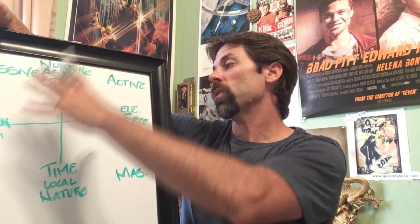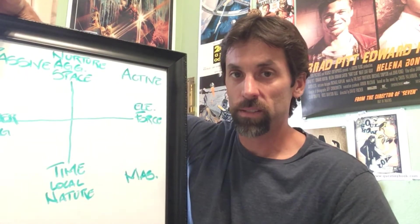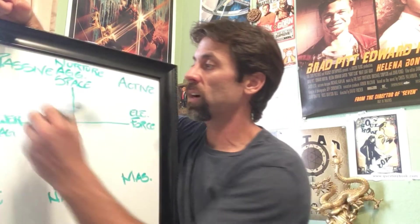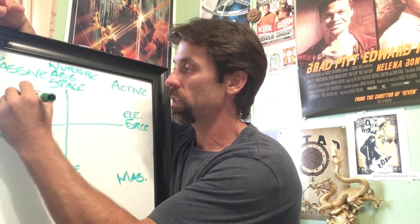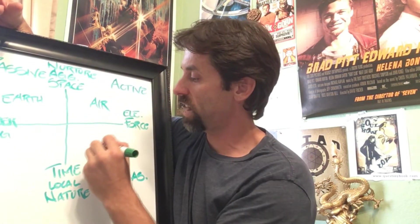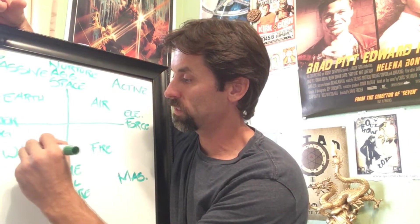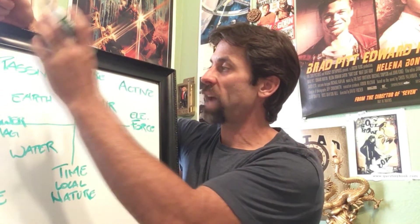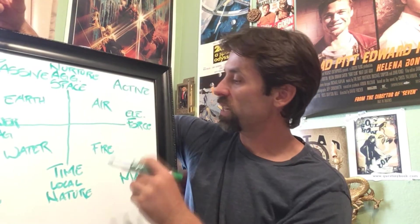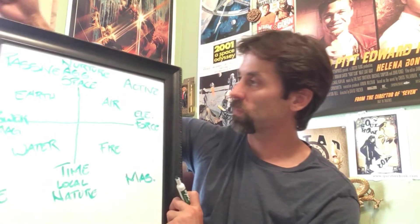When you power the system, you also create the four elements that we use and exist in around us. Those four elements are earth, air, fire, and water. Earth is the passive feminine property. Air is the active masculine property. Fire is the masculine active property. Water is the feminine passive property.